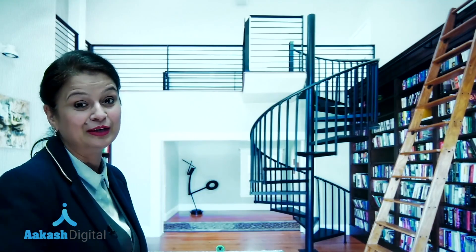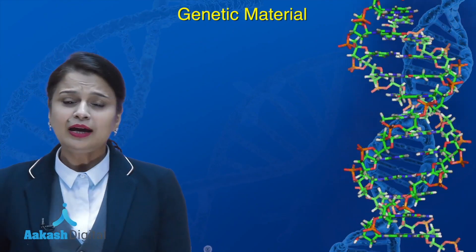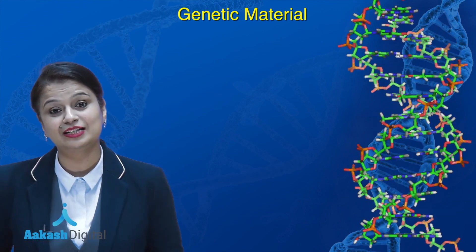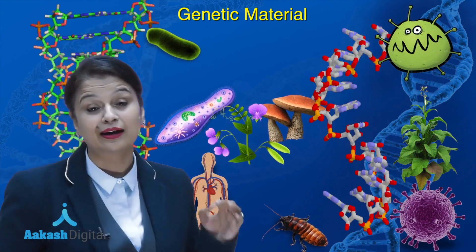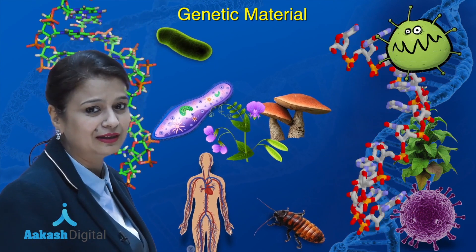All of you might be surprised why I am showing you this figure. Do you know any biochemical in our body which shows a spirally twisted condition? The hint is that it is the one which makes us who we are. Yes, the right answer is DNA. DNA is the genetic material in the majority of organisms and living systems, but in few viruses, RNA works as the genetic material.